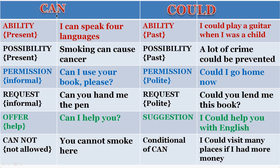Ability in the present — use 'can.' Use 'could' if you want to express the past, your ability which has happened in the past. Similarly, possibility: 'Smoking can cause cancer' — there is every possibility in that. Possibility in the past: 'A lot of crime could be prevented.' So that's how we use can and could.